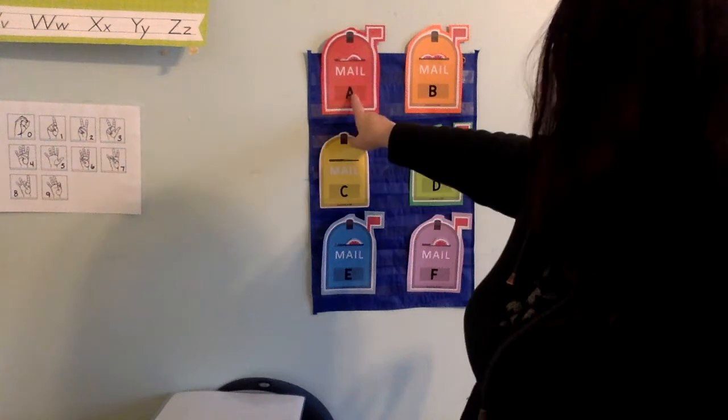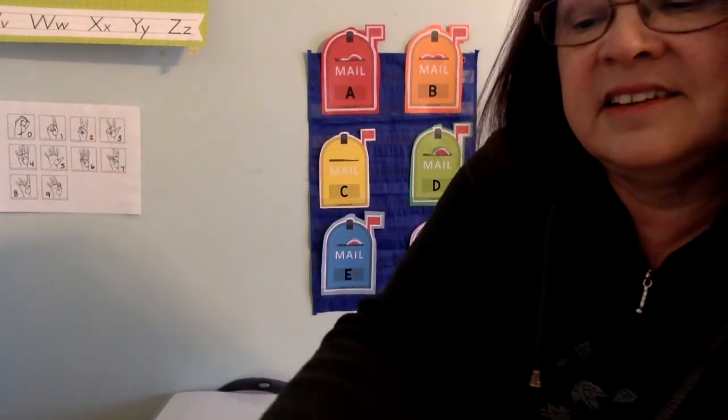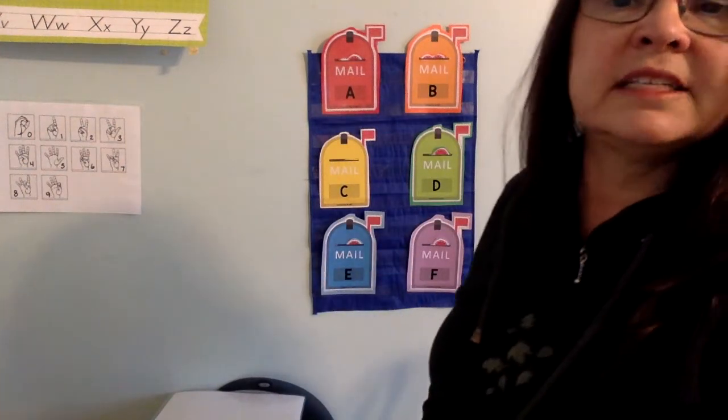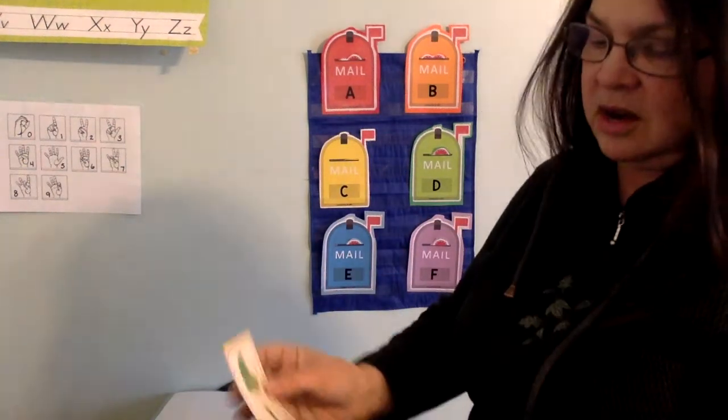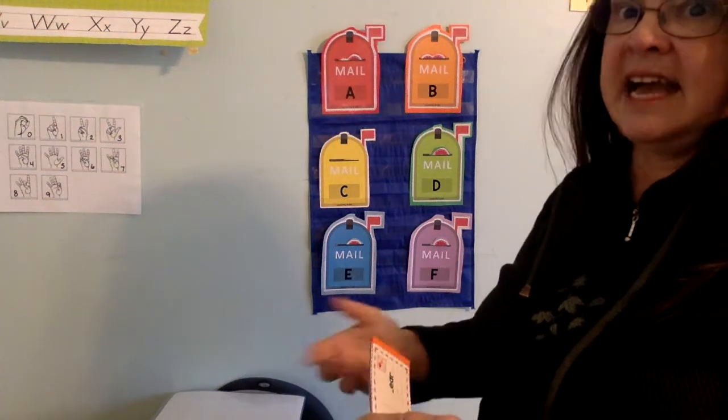Alright, now that we got our uppercase letters and our lowercase letters done for A, B, C, D, E. Now we're going to look at some pictures. And we're going to identify the pictures and then try and figure out what the first letter, by making the sound.